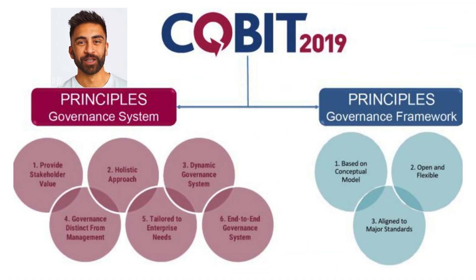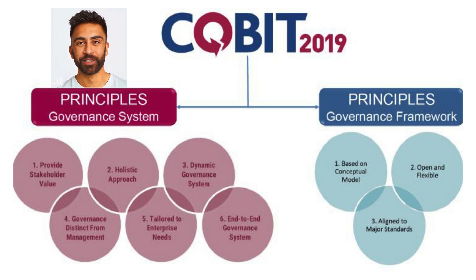COBIT focuses on IT governance and management. COBIT, which stands for Control Objectives for Information and Related Technology, is a framework created by ISACA, the Information Systems Audit and Control Association. It is designed to help organizations manage and govern their IT environments in a structured and consistent manner. COBIT provides a comprehensive framework that assists organizations in achieving their strategic goals by ensuring effective governance and management of IT resources, aligning IT strategies with business objectives.